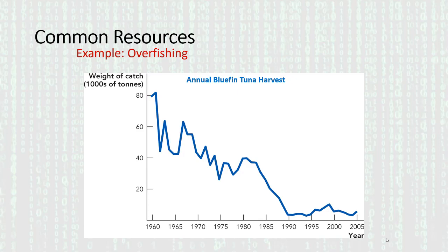A real-world example of this is overfishing. The problem with overfishing is that the world's oceans are open access — anybody can go out there and try to catch as much fish as possible. There's no governing body that tries to limit your catch. So what happened to certain species of fish is that they were historically over-harvested. If fishermen take too much of a species, there's not enough left to reproduce.